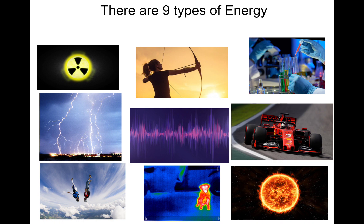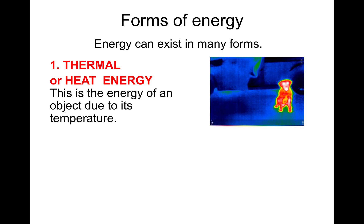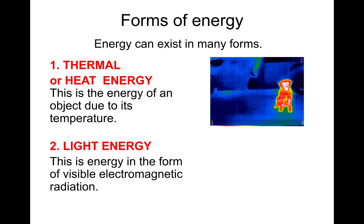So there's nine types of energy. I want you to pause and see if you can list any of them. You can use these images to help you. So some forms of energy. Energy can exist in many forms. The first one, thermal or heat energy. This is the energy of an object due to its temperature. Light energy. This is the energy in the form of visible electromagnetic radiation.